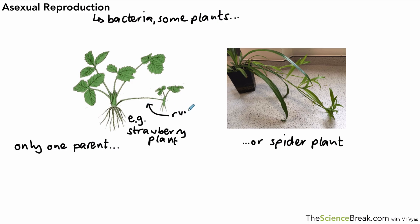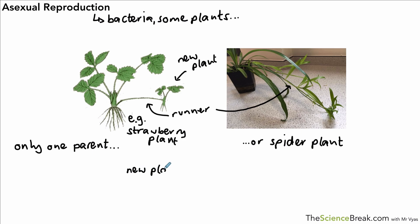With the spider plant, a runner develops and at the end of the runner a new plant is formed, with new roots, a new shoot, and new leaves. The runner then breaks down and disappears, leaving a standalone new plant. Each of these new plants is genetically identical because there has been no mixing of gametes from two different parents.